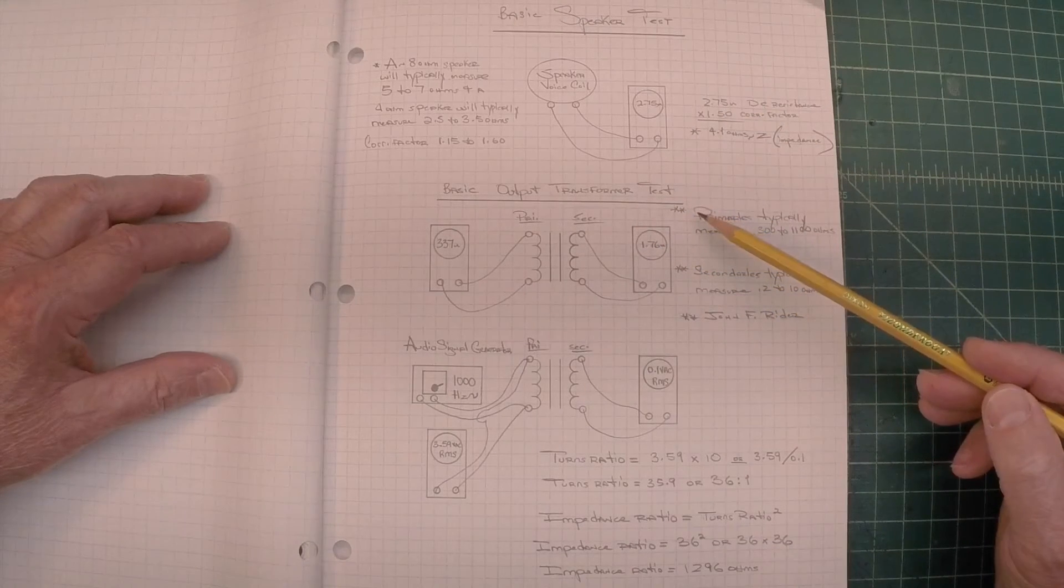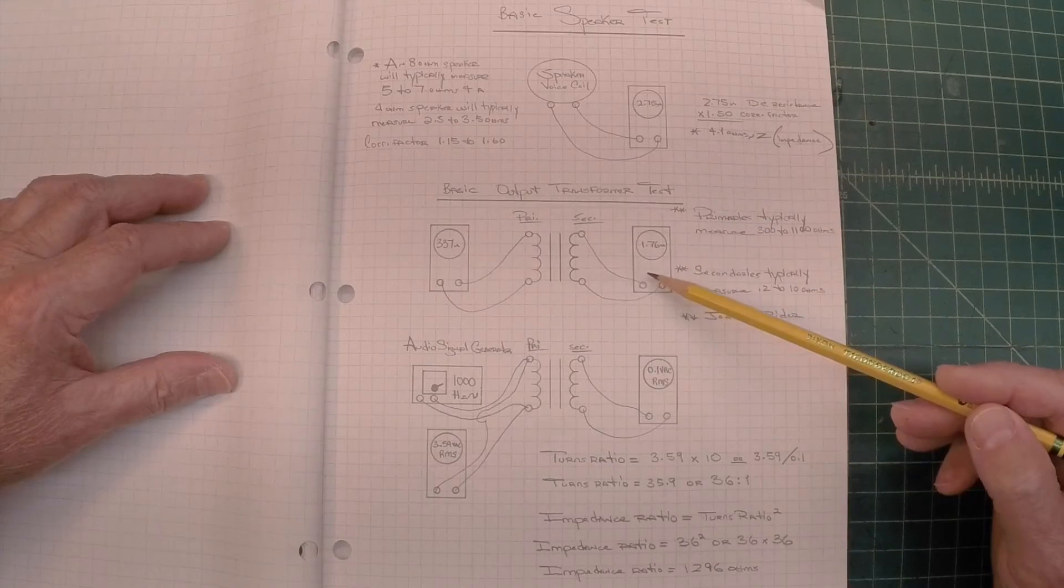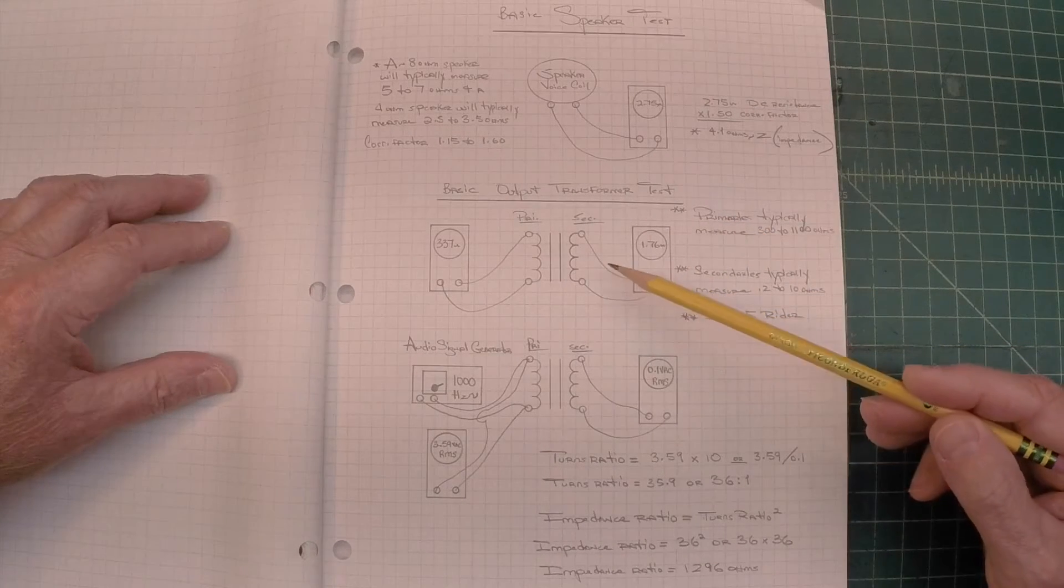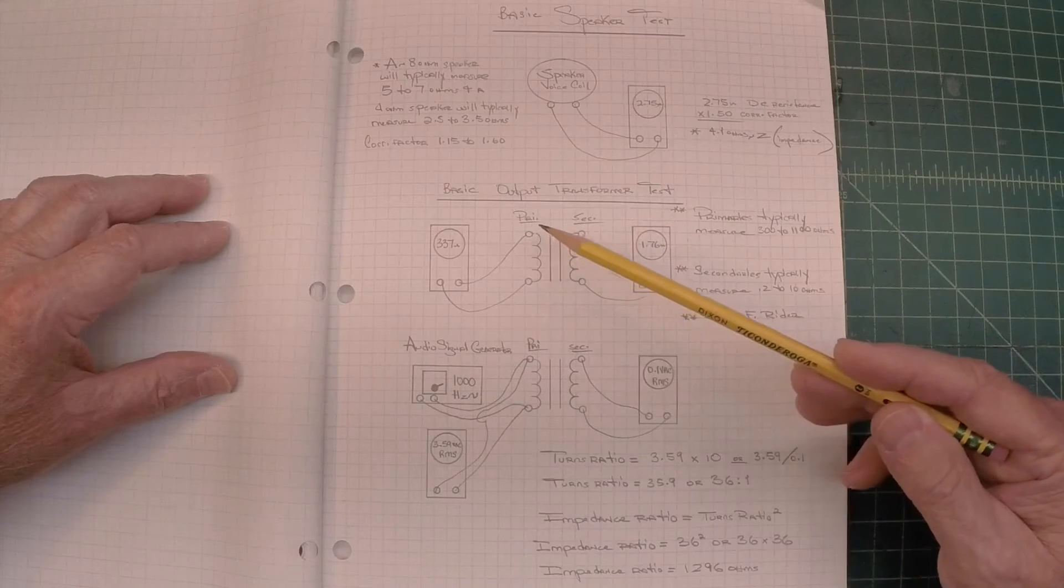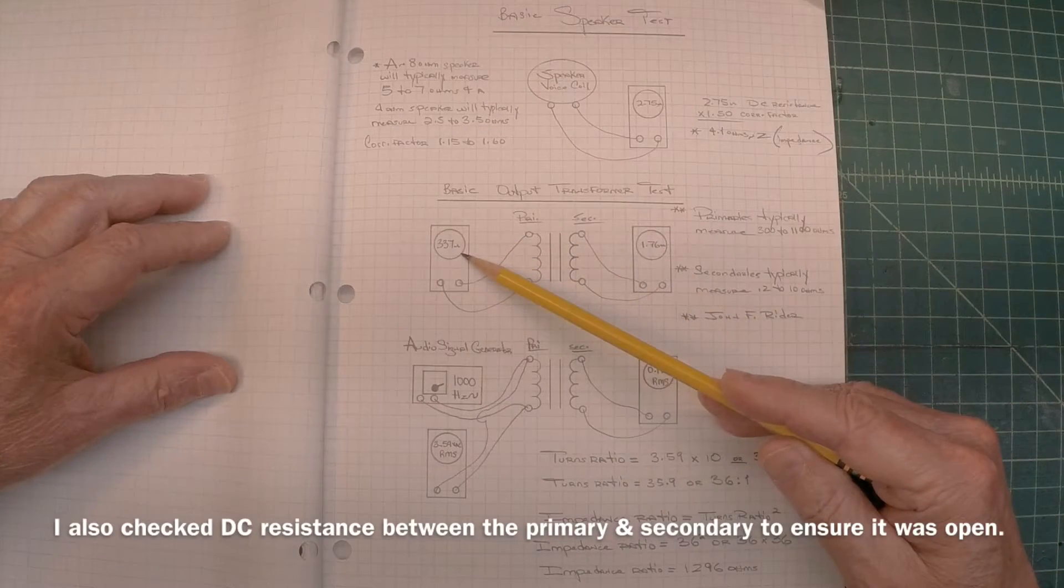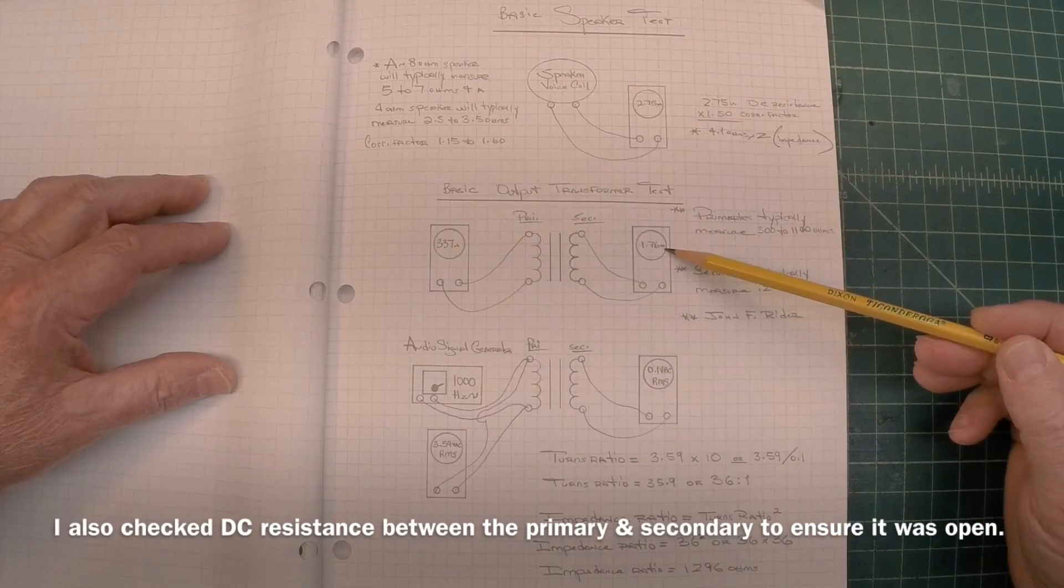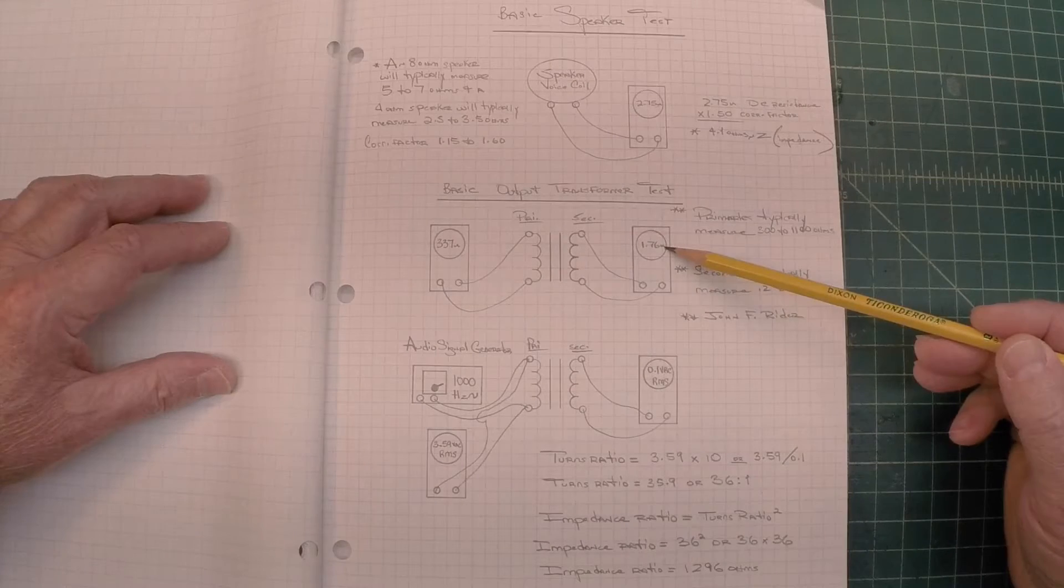Moving down here, you can look at the basic output transformer test. I'm just looking at DC resistance starting with the primary, 337 ohms of DC resistance, and on the secondary side, 1.76 ohms of DC resistance.